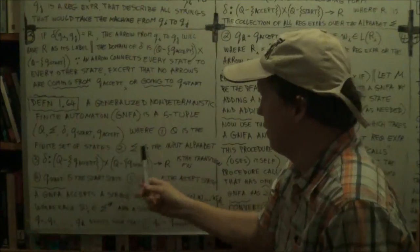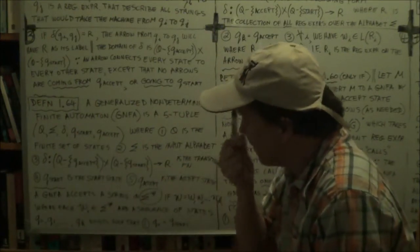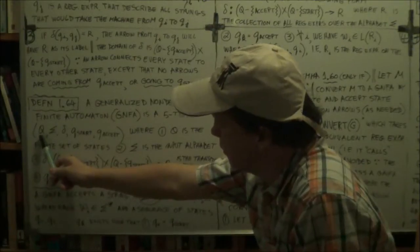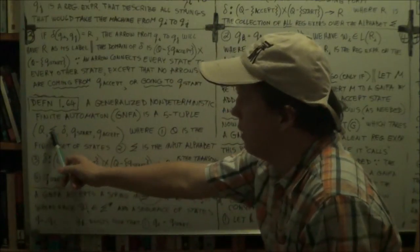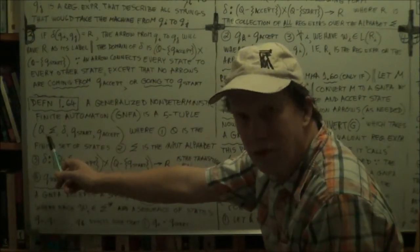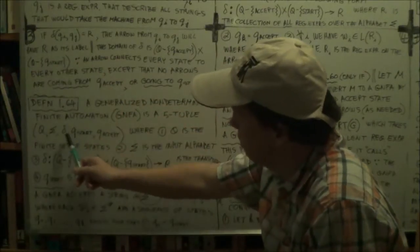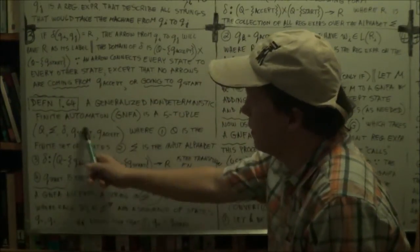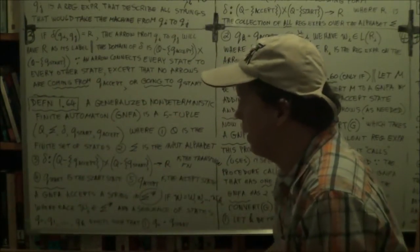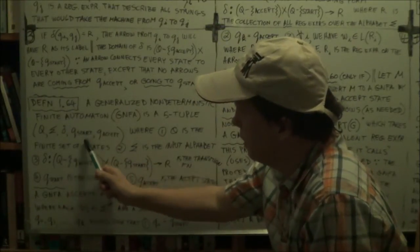Okay. Let's see. So the usual thing with a few differences. The set of states, no change. The input alphabet, the allowed symbols in your input string, the same. The delta we talked about, quite different. Okay. Start state, same. Well, perhaps I should mention, the start state in a GNFA is like an extra state.